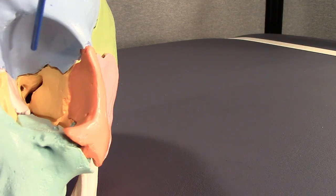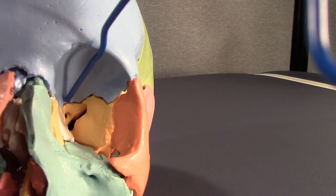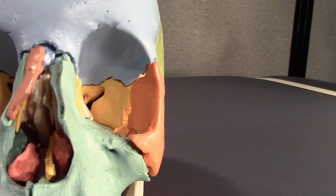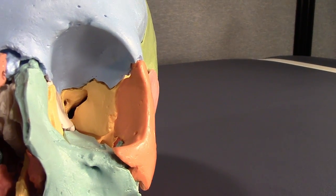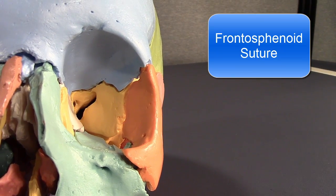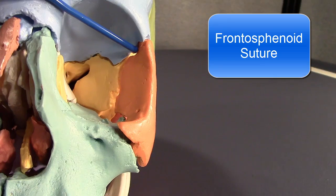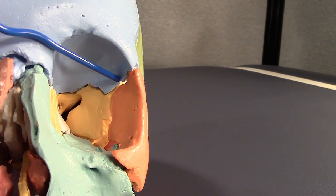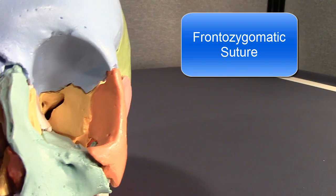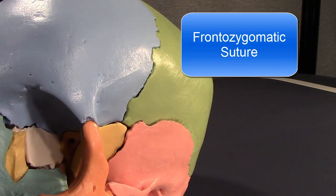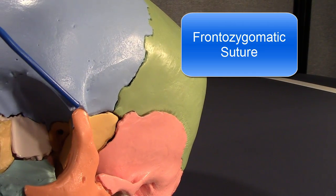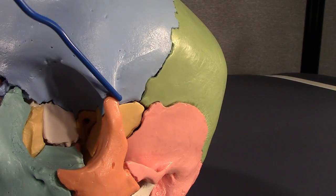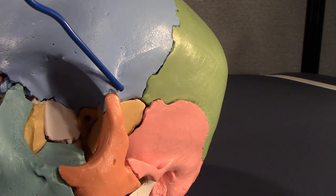If we look inside the orbit, we can also see an articulation all across here with the lesser and greater wing of the sphenoid. So all of that is called the frontal sphenoid suture. It also articulates here, the lateral part of the orbit with the zygomatic bone. So that's called the frontal zygomatic suture. If we follow that to the outside, it's also called the frontal zygomatic suture. Although some texts have called it the zygomatic frontal suture. Grays and some of the bigger ones, frontal kind of goes first.